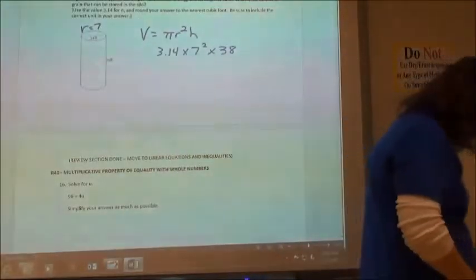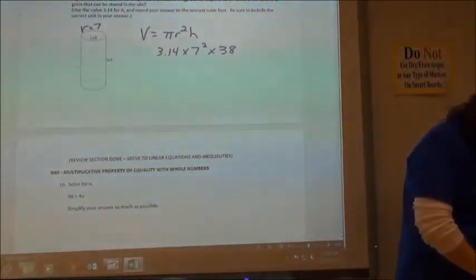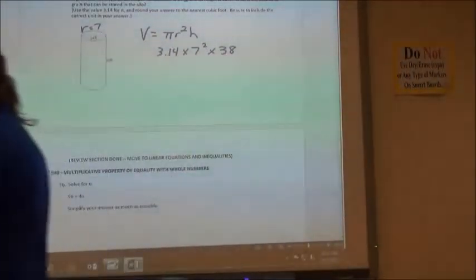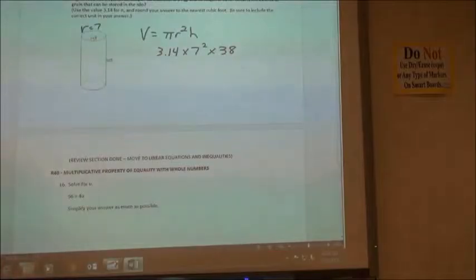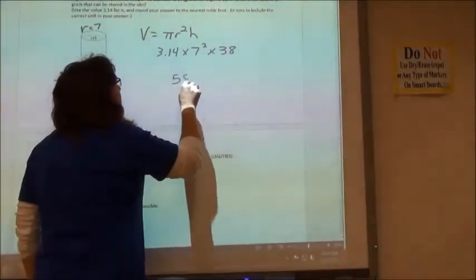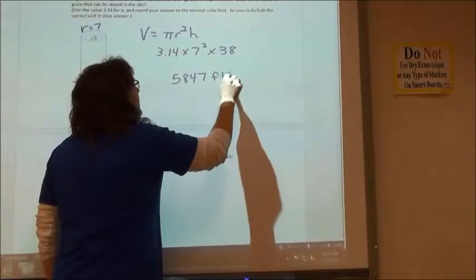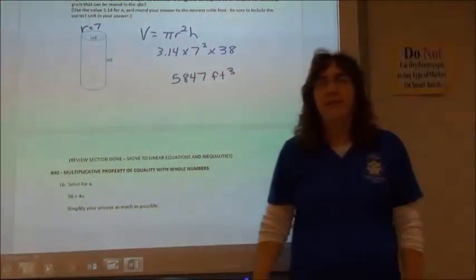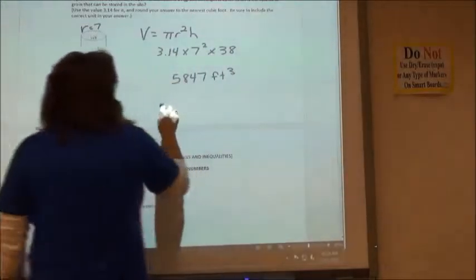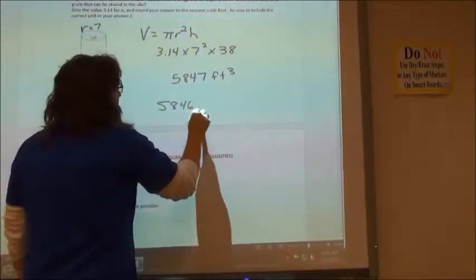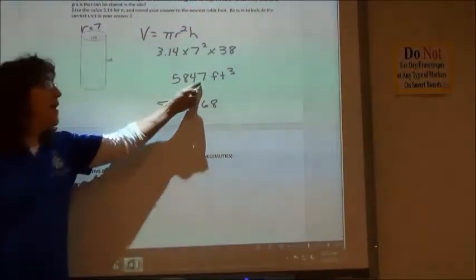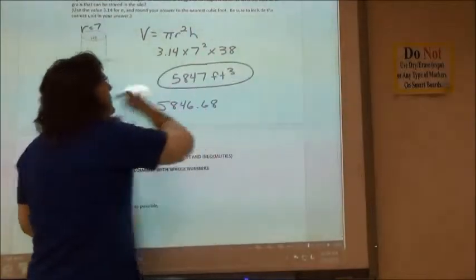I used the wrong number. 5847 and my label, feet cubed. So you get 5846.68. But since I have a 6 in my tenth spot, I ended up having to round it up to 47.